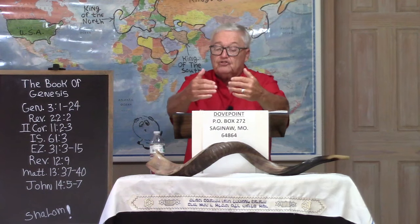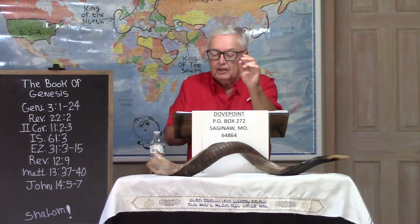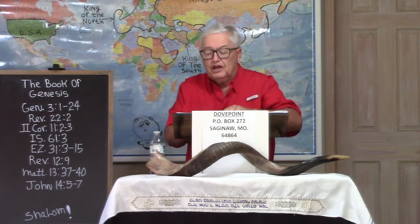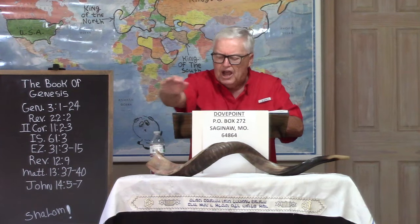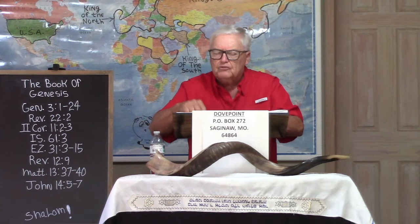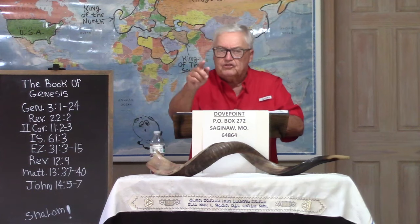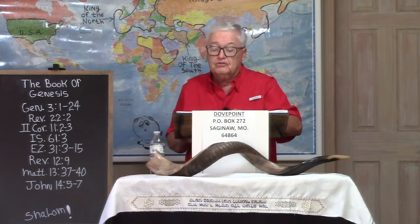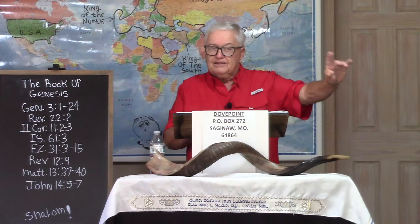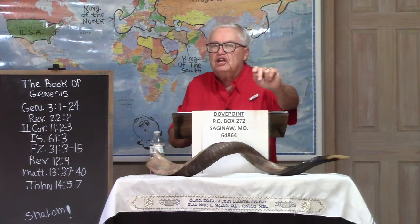Now back to Genesis chapter 3, picking up in verse 5. Satan continues to talk to Eve and says, 'For God doth know that in the day you eat thereof, then your eyes will be opened and you shall be as gods' — small g, not capital G — 'knowing good and evil.' In other words, Satan is telling her, you'll be just like us, the angelic beings, and you'll know good from evil. At this point, Eve was created innocent and she still is innocent right here, even after he says this.